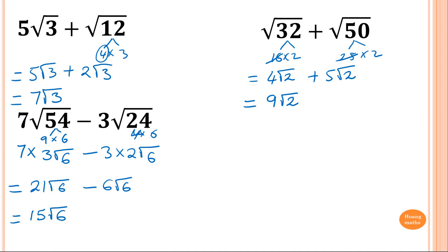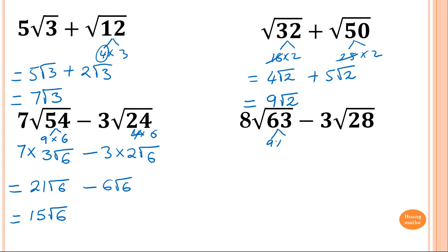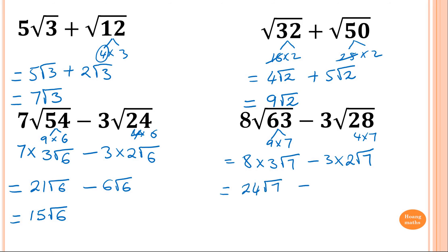Next: 8 square root of 63 minus 3 square root of 28. For 63: that's 9 times 7, so root 9 is 3, giving 8 times 3 root 7, which is 24 root 7. For 28: that's 4 times 7, so root 4 is 2, giving 3 times 2 root 7, which is 6 root 7. Then 24 minus 6 is 18, so the answer is 18 square root of 7.